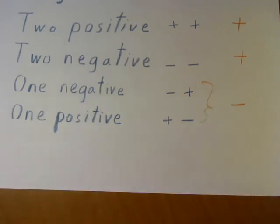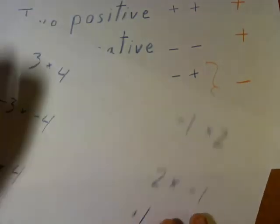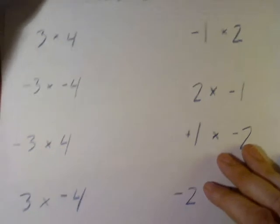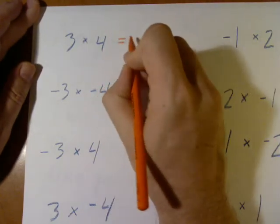Let's look at some examples. Here we can do some multiplying. 3 times 4. We know the answer. That's 12.